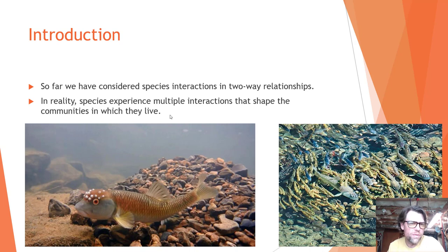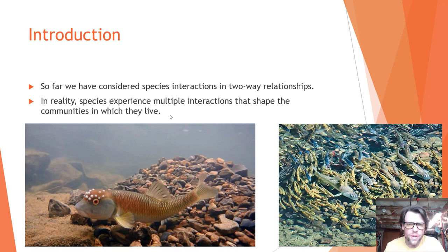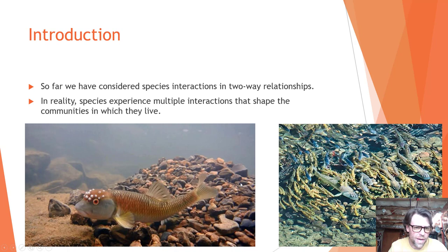As an introduction, so far we've considered species interactions in two-way relationships — predator-prey, commensalism, mutualism, competition, those types of interactions. However, in reality species experience multiple interactions that shape communities where they live. As an example, the bluehead chub on the left of the screen builds a mound of rocks — picking up with their mouth up to about 8,000 rocks and moving them into a giant mound in a stream — and then they reproduce on it.